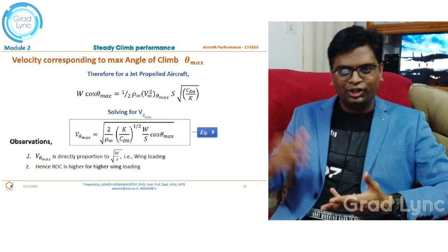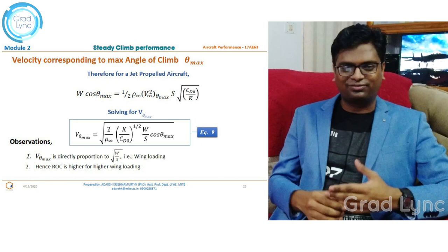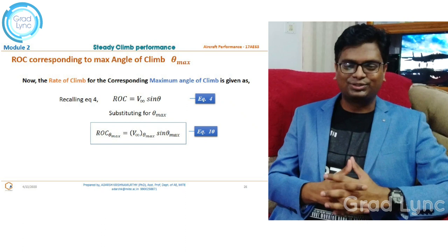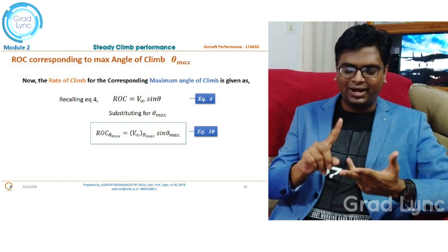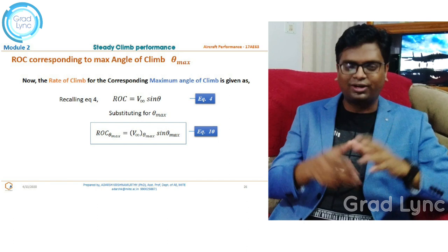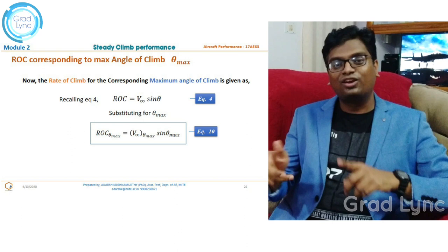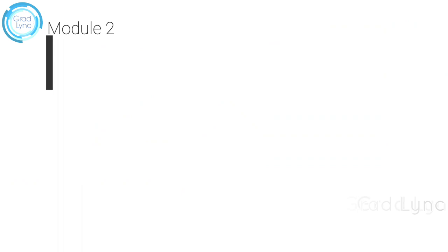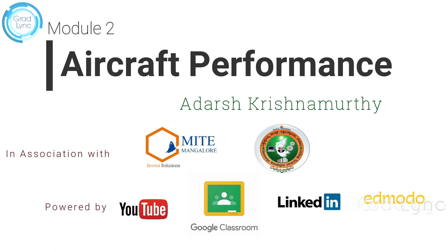Now, knowing the angle of climb and the corresponding velocity to achieve that angle of climb, I can easily calculate the rate of climb. Using Equation 4 and substituting the maximum angle of climb θ_max and the velocity corresponding to θ_max, I obtain the rate of climb for the maximum angle of climb condition — denoted RoC at θ_max.